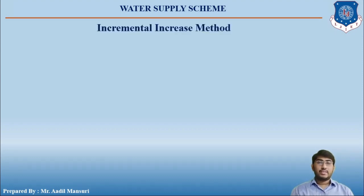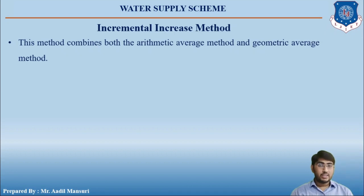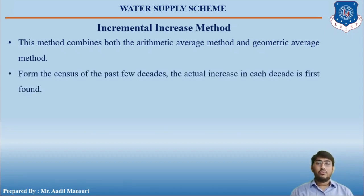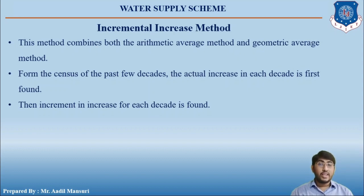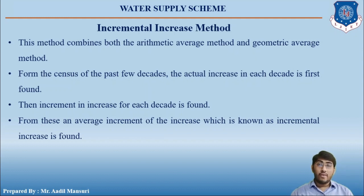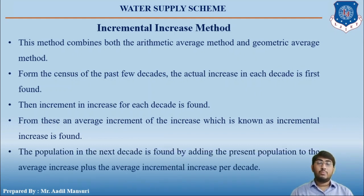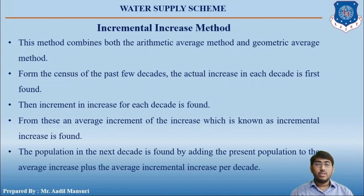Let us now move to the next method: the incremental increase method. This method is a combination of both the arithmetical increase method and the geometrical increase method. From the census data, the actual increase per decade is first found out, then the increment in increase for each decade is found, and from this an average incremental increase is calculated. The population in the next decade is found by adding the present population to the average increase and the average incremental increase per decade.